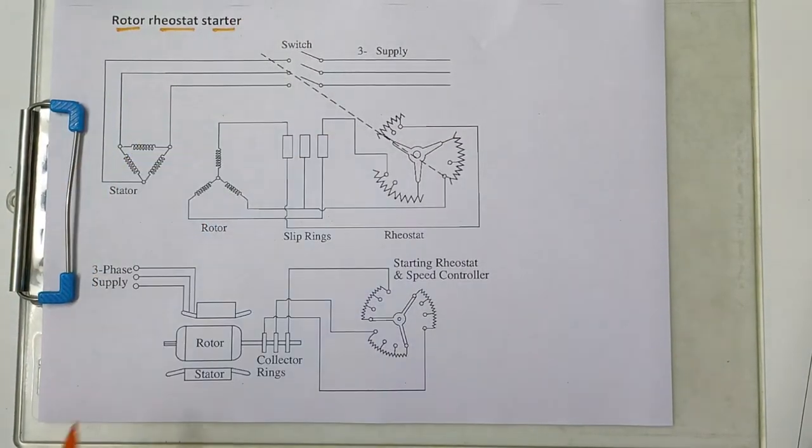In this video we will learn about rotor rheostat type of starter which is used for slip ring type of induction motor. This type of starter is not applicable to squirrel cage type of induction motor.